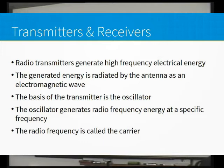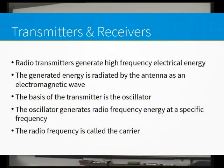Transmitters generate high frequency, very high frequency, or ultra high frequency electrical energy. The generated energy is radiated by an antenna as an electromagnetic wave, and we'll go into that in the next module. The basis of a transmitter is called an oscillator — all an oscillator is, is something that generates alternating current at the frequency that you want it at. We call the signal generated by that oscillator a carrier.